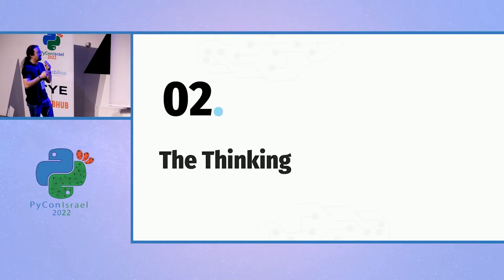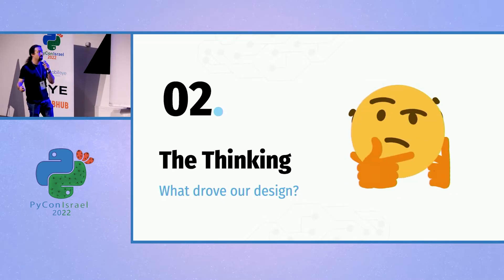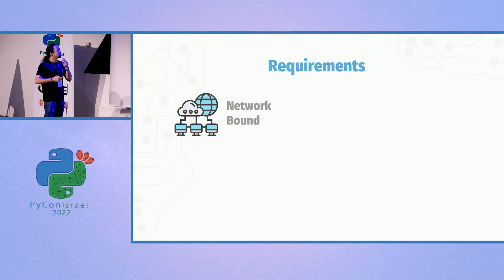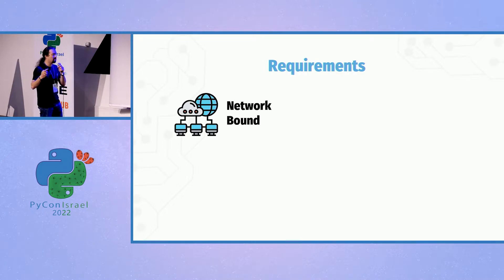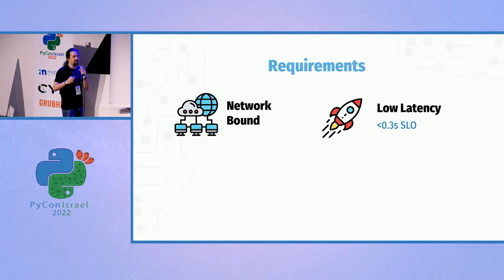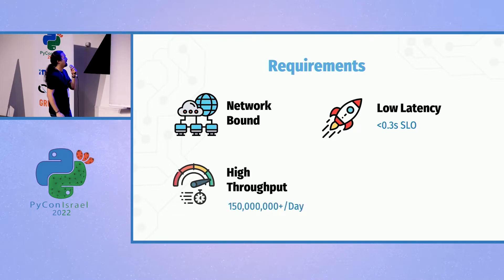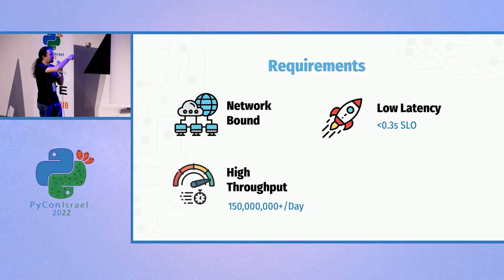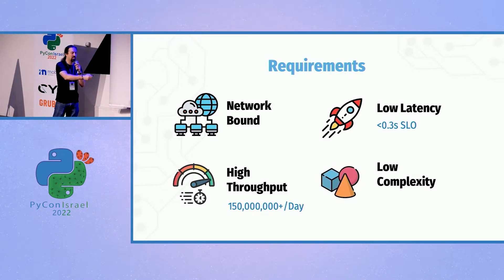Now that we understand that, let's see how we redesigned a new service. When redesigning, we really need to understand what we're designing for. First, this was a network-bound service — everything was coming from the network and going out to the network, no disk, no heavy state, no heavy compute, mostly network IO. We were striving for low latency — less than 300 milliseconds SLO. We had to design for high throughput: at the time, 150 million events daily, with spiky bursts throughout the day. And of course, we want something that's not over-engineered, low in complexity, extensible, and maintainable.